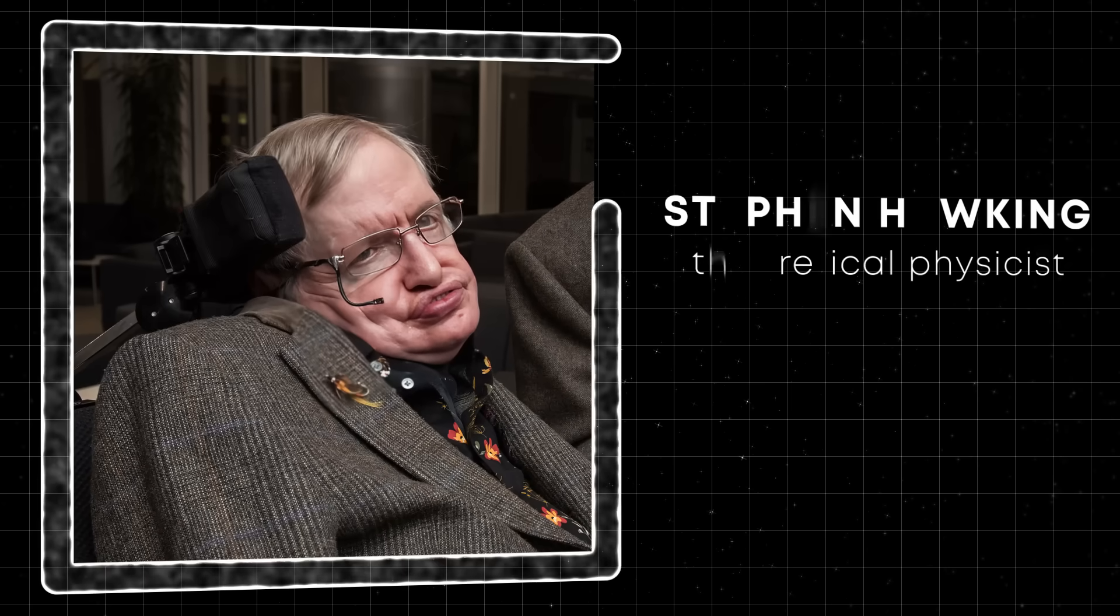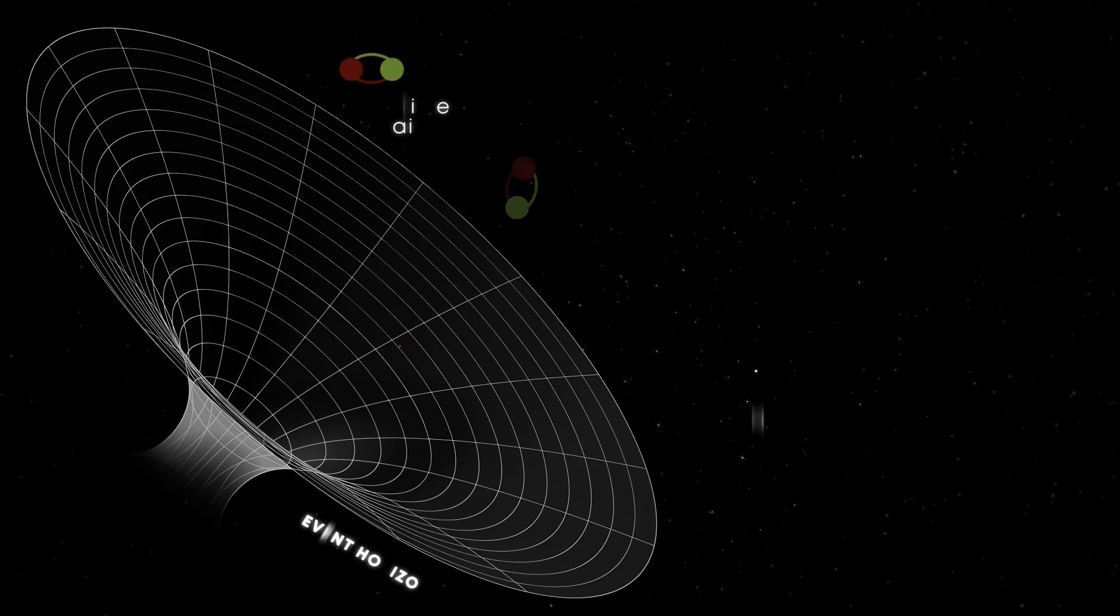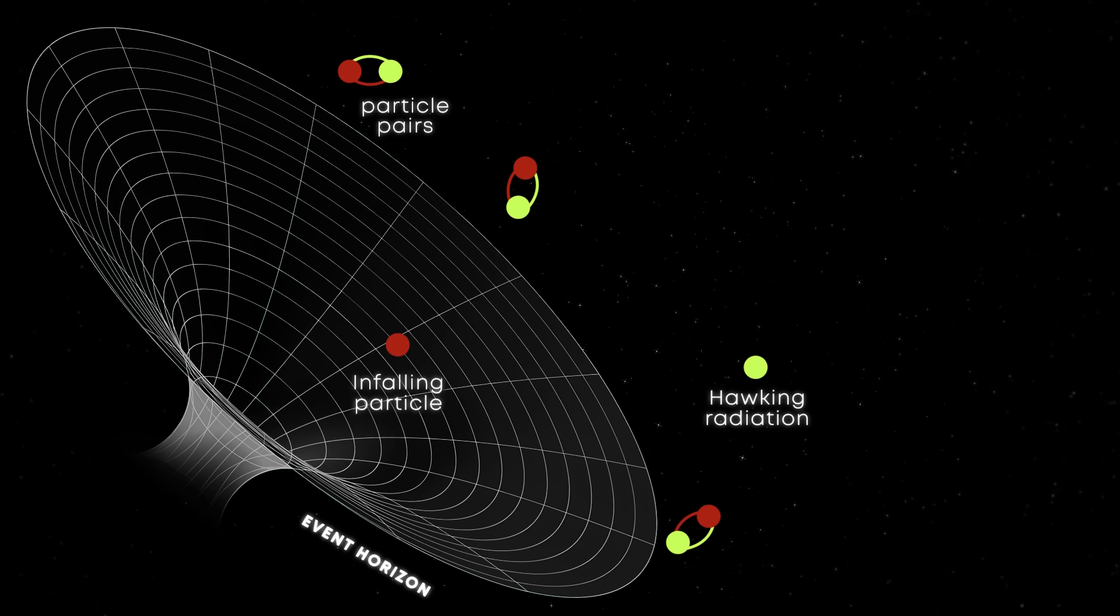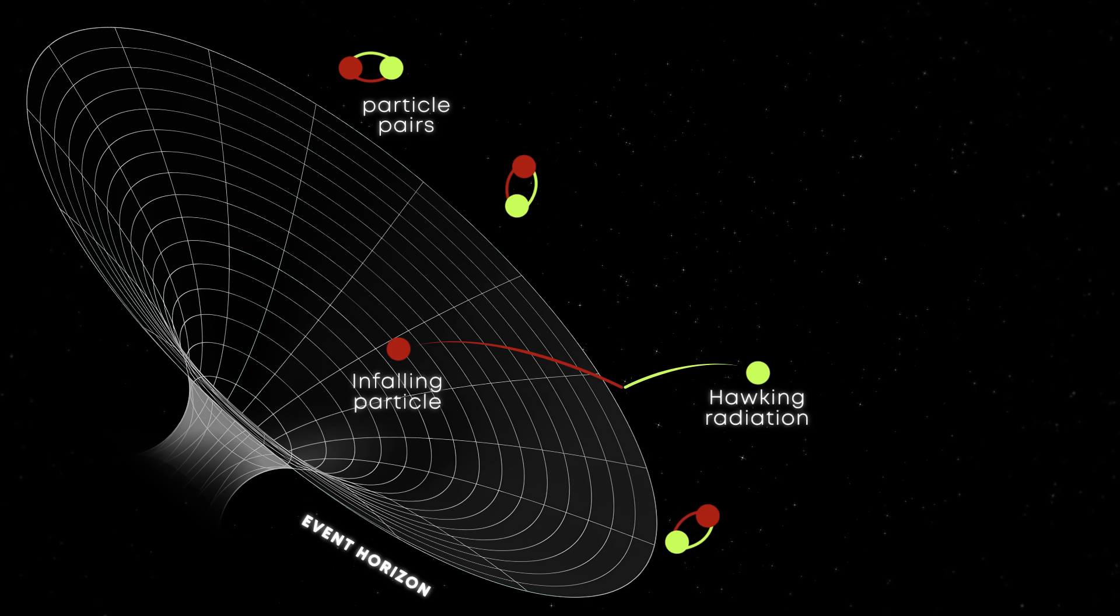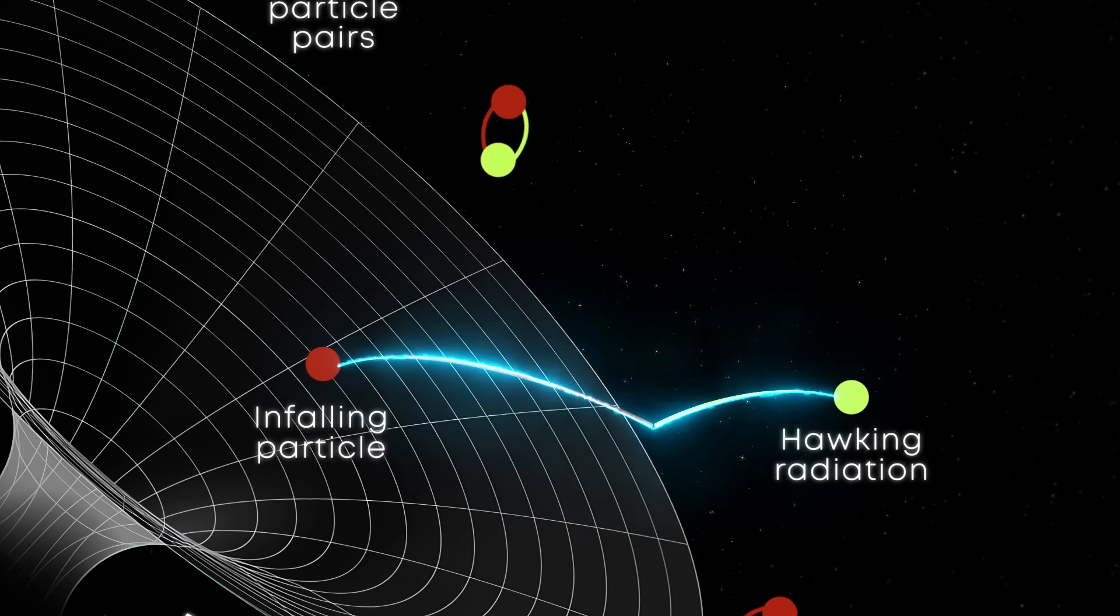The late, great Stephen Hawking explained this with his theory of Hawking radiation. When a particle-antiparticle pair forms near the event horizon, one of them falls into a black hole while the other one escapes. And by doing so, the free particle steals energy from the black hole.